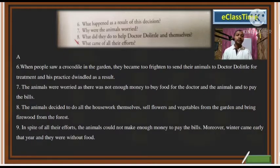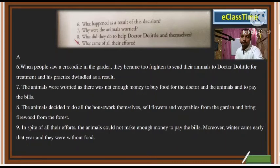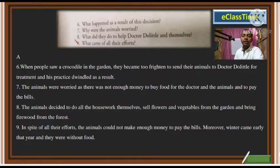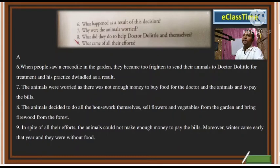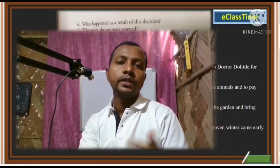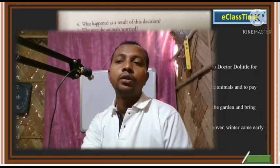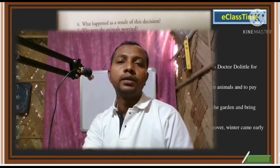The last question is: What came of all their efforts? In spite of all their efforts, the animals could not make enough money to pay the bills. Moreover, winter came early that year and they were left without food. They had been working hard — cultivating vegetables, selling flowers, cleaning the house, and bringing firewood — but it was still not sufficient, and the early winter made their situation worse. Please copy the answers in your notebook; the remaining answers will be shared very soon. Thank you.